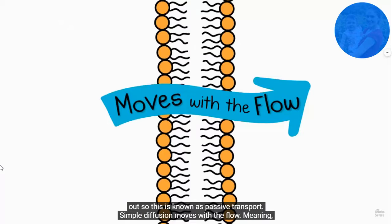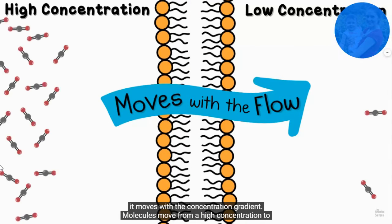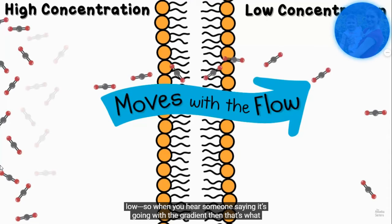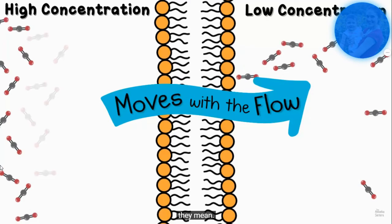Simple diffusion moves with the flow, meaning it moves with the concentration gradient. So when you hear someone saying that something's going with the concentration gradient, that's what they mean. They mean it's going from high concentration of molecules to a low concentration of molecules.